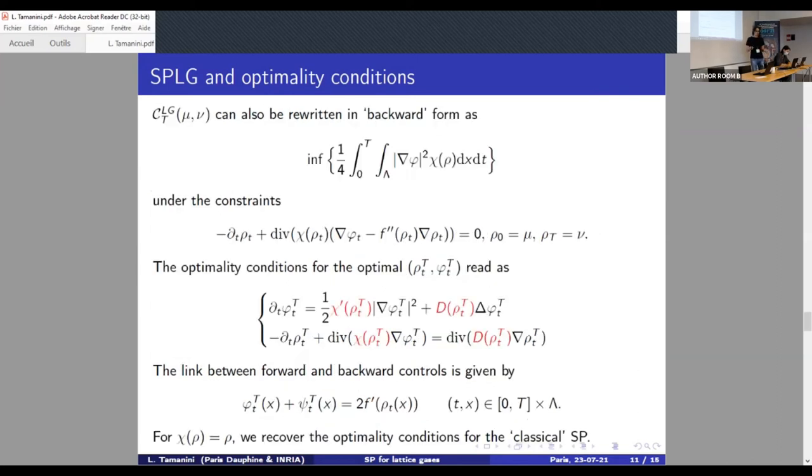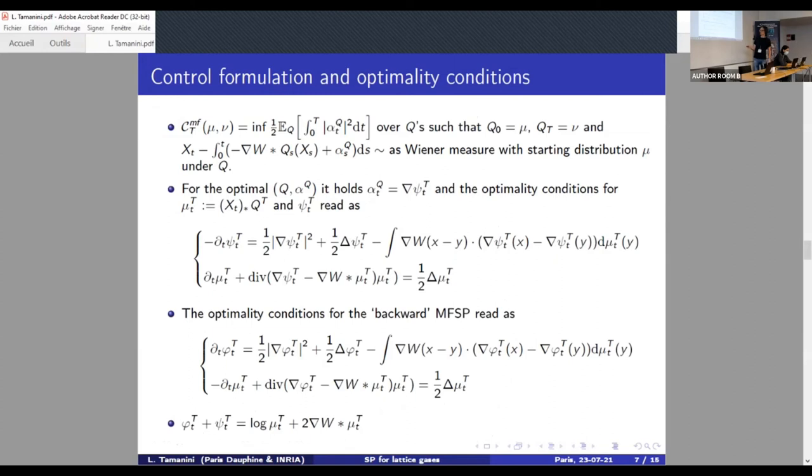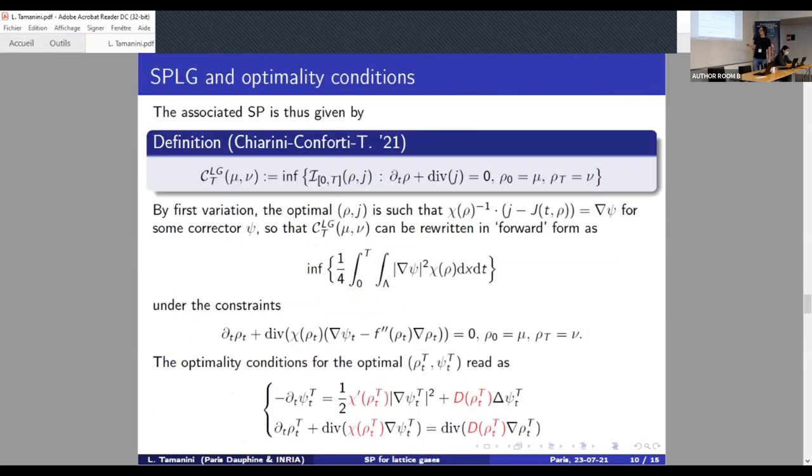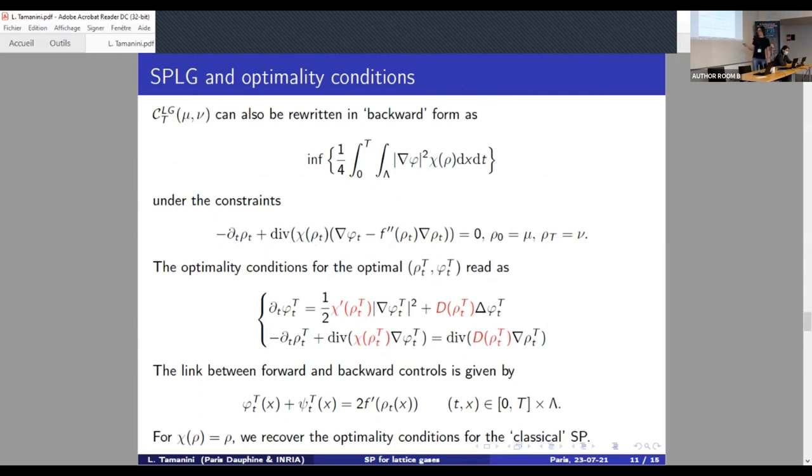Nonetheless, we can still perform a time reversal, which leads again to another system of PDEs for the reverse dual variable φ. And again, the system we have is symmetric to the previous one, and the dual variables are related together by this identity, which is the generalization to the case of lattice gases of what I wrote before, which was in the case of the mean field, the classical Schrödinger problem is just φ plus ψ equal logarithm. For the mean field, there is also this extra term, while for the Schrödinger problem on lattice gases, it involves the derivative of the free energy. And everything we get, of course, is consistent with the previous examples, just taking for instance χ equal the identity, we recall the classical Schrödinger problem.